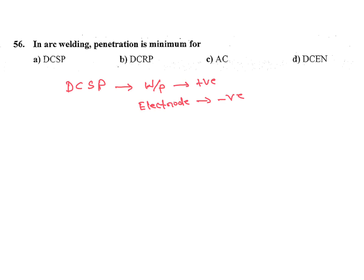In DCRP, workpiece connected to reverse polarity negative terminal and electrode connected to positive terminal. AC is alternating current.